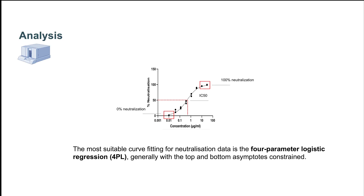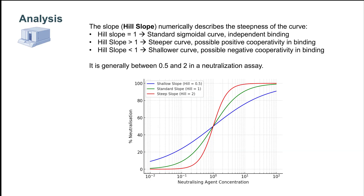The fitting that we should choose for the neutralization curve is a sigmoidal four-parameter logistic regression curve, preferably with constrained top and bottom asymptotes, as this avoids overfitting and maintains the curve in a biologically meaningful range. This plotting will provide us with a sigmoidal curve. The slope of such curve is called the hill slope, and it generally ranges between 0.5 and 2 in neutralization assays. A hill slope higher than 1 will give us a steeper curve, which may be indicative of possible cooperative binding, and a hill slope lower than 1 will give us shallower curves, which may be indicative of negative cooperative binding.